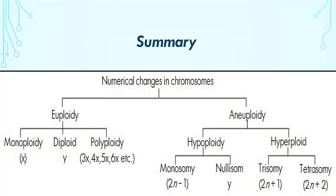In summary, numerical changes in chromosomes can be of two types: euploidy and aneuploidy. When the variation takes place in a whole set, that is called euploidy; when variation takes place in the total number of chromosomes without variation in the set, that is called aneuploidy. Euploidy generally occurs in higher order plants while aneuploidy is commonly seen in the human population. Euploidy is of three types — monoploidy, diploidy, and polyploidy — and aneuploidy is of two types: hypoploidy and hyperploidy.